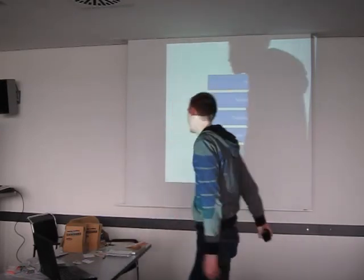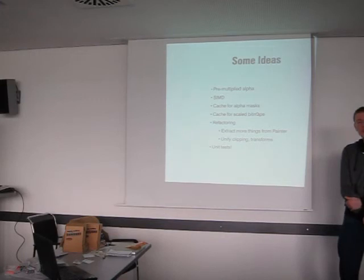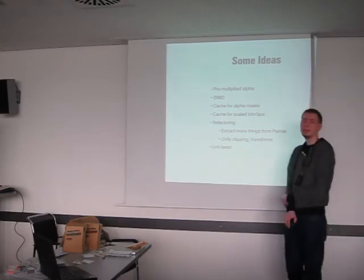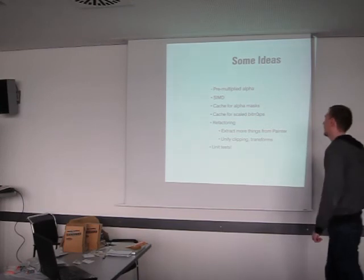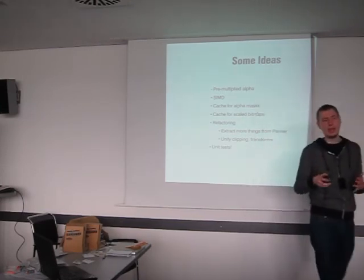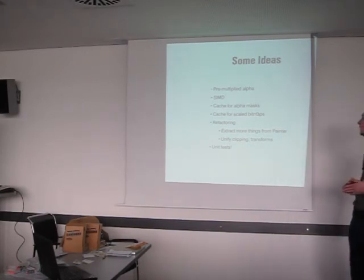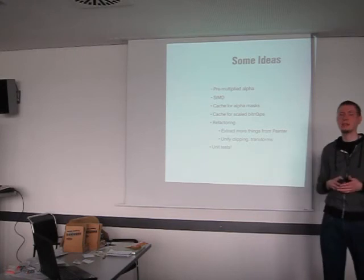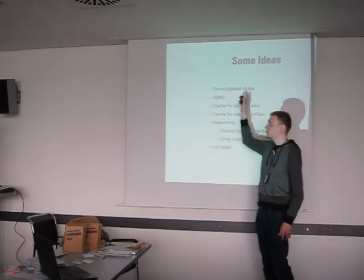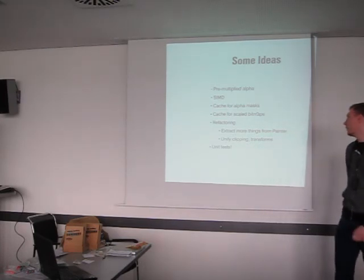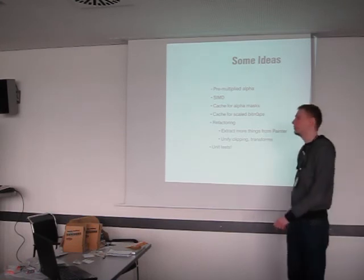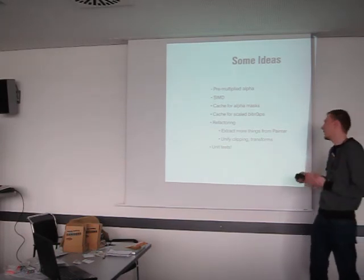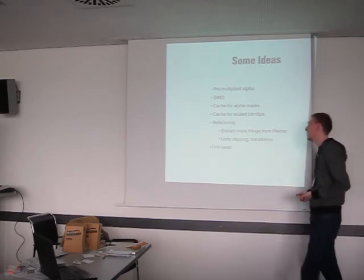Short outlook on further ideas. One larger thing that could help a lot with compositing would be implementing pre-multiplied alpha — a different way to represent alpha bitmaps where you can compose bitmaps together much faster. However, adding this properly is not simple: with pre-multiplied alpha you can't use normal linear RGB with 8 bits per channel because you'd get too much precision loss, and we use that everywhere in AppServer, so things would need to be reconsidered.